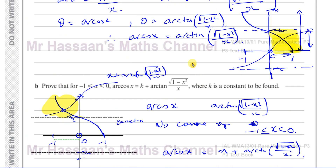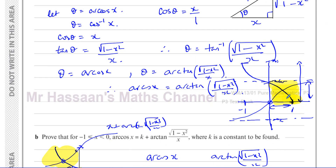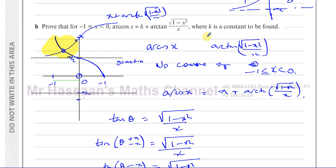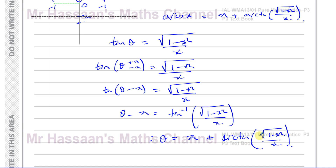This is a bit of an abstract topic. It's to do with the fact that a function cannot be a proper function unless it's one-to-one or many-to-one — not one-to-many. The inverse cosine is limited between 0 and pi, and the inverse tan is limited between minus pi over 2 and pi over 2. So between 0 and minus 1 there's no intersection, meaning this has to be translated upwards by pi for it to have an intersection in that domain.